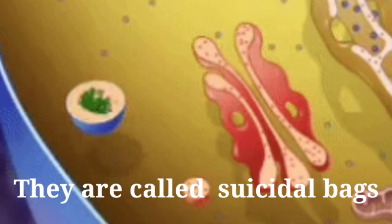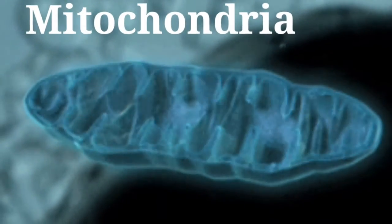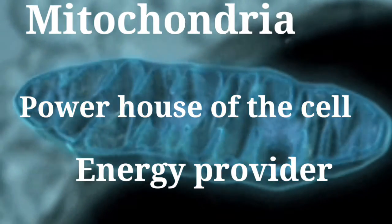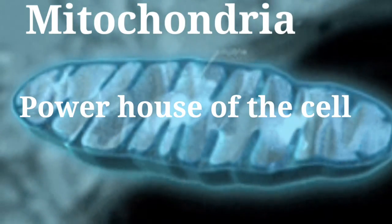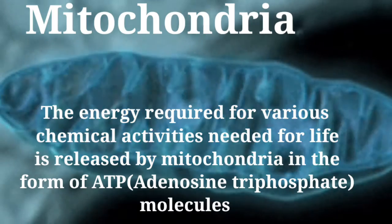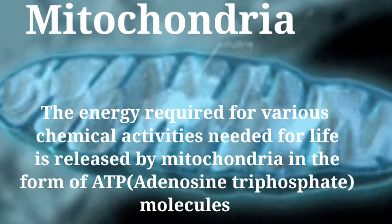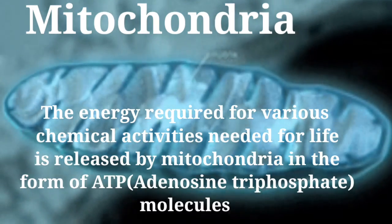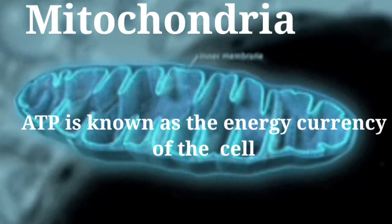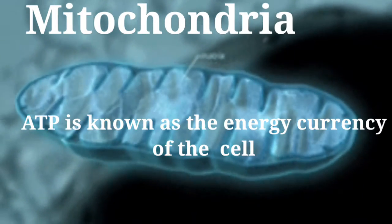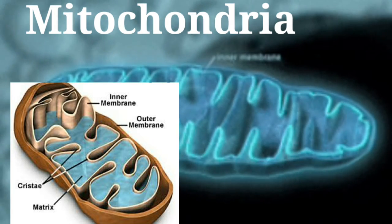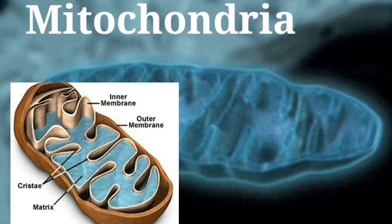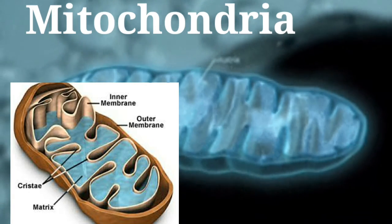The next is mitochondria, or the powerhouse of the cell and energy provider. Mitochondria are known as the powerhouses of the cell. The energy required for various chemical activities needed for life is released by mitochondria in the form of ATP molecules, that is adenosine triphosphate. ATP is known as the energy currency of the cell. Mitochondria have two membrane coverings: the outer membrane is very porous while the inner membrane is deeply folded. They are also able to make some of their own proteins.